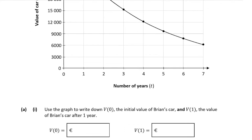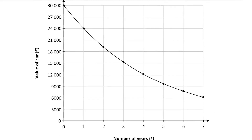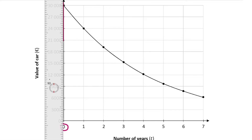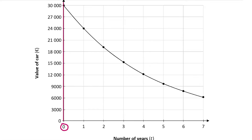The first part of the question wants us to write down the initial value of Brian's car, which is V0. The initial value is after zero years, which is where zero is on the x-axis — the same as the y-axis. We can see the graph hits that line at the top at €30,000, so the initial value of Brian's car is €30,000.